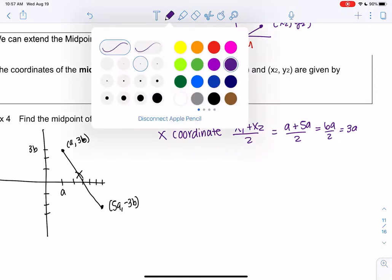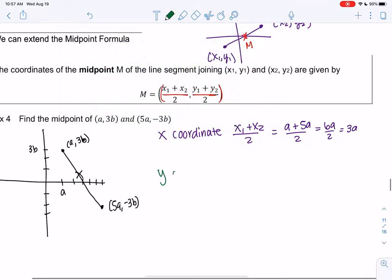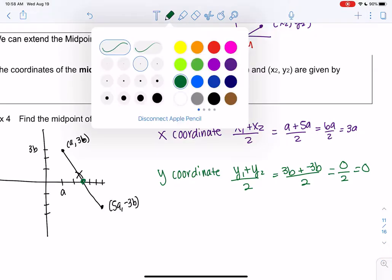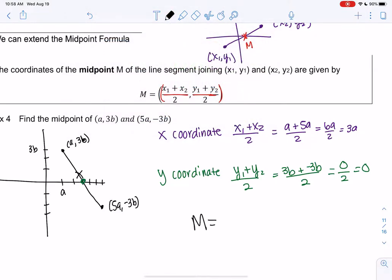And then the y-coordinate, same idea, we'll average out the y values. Y1 plus y2 all over 2, so y1 would be 3b, and then plus negative 3b all over 2. So it looks like we get 0b, so 0 over 2, or 0. So maybe my midpoint was actually right there. And so my midpoint, which we'll call M, is (3a, 0). That would be halfway in between.